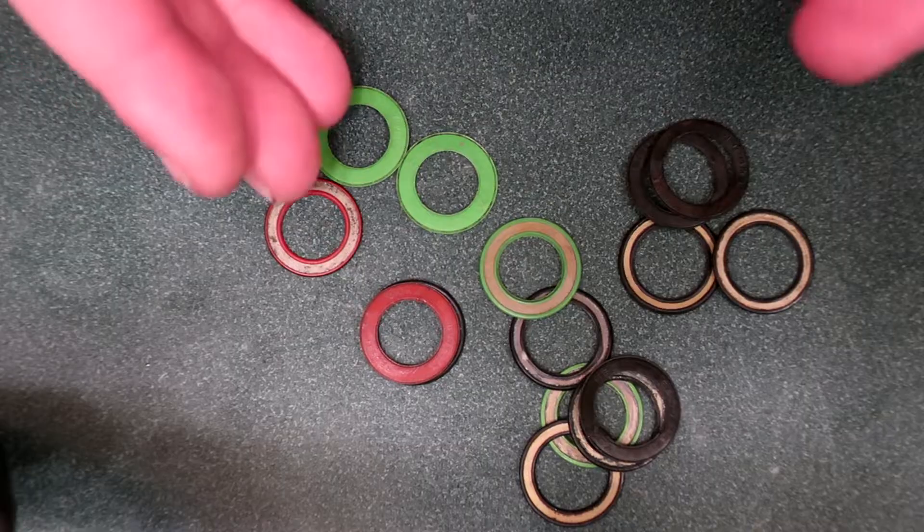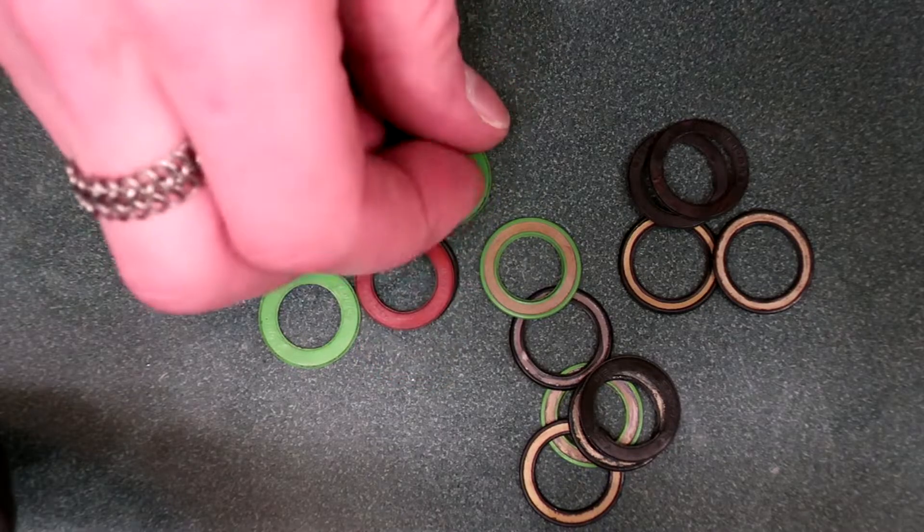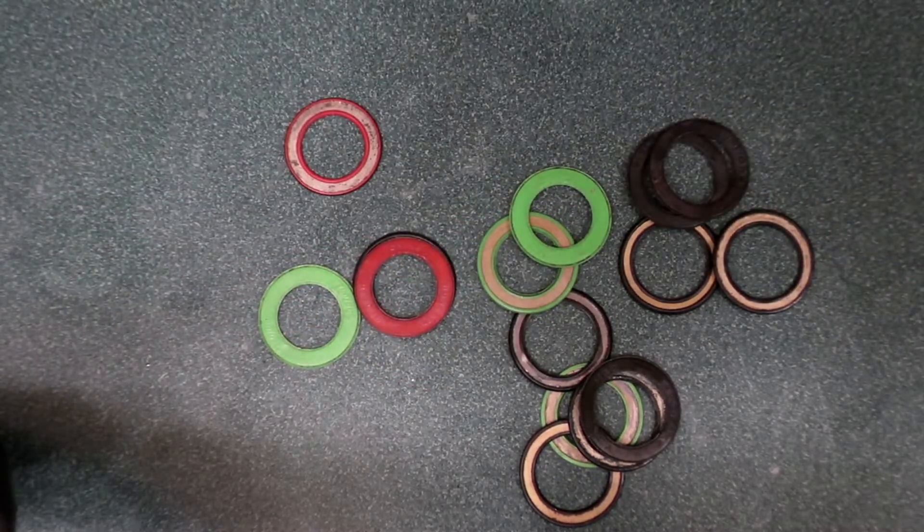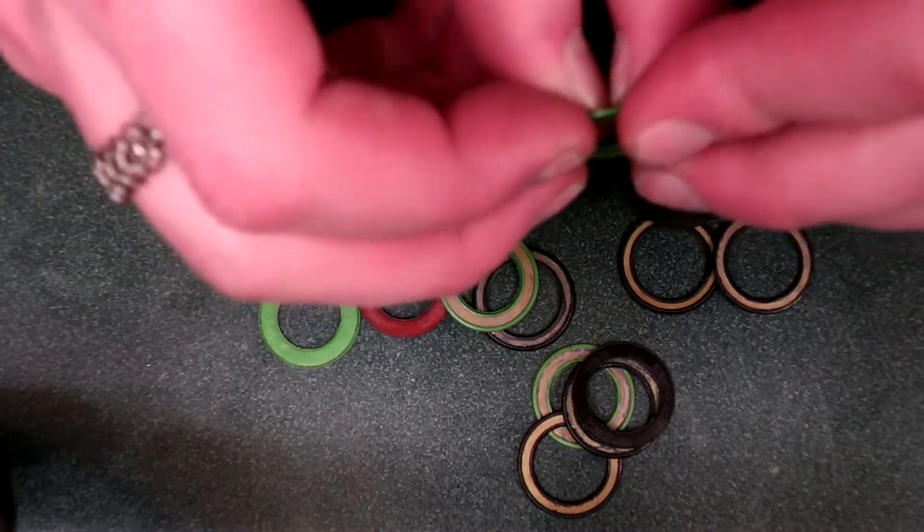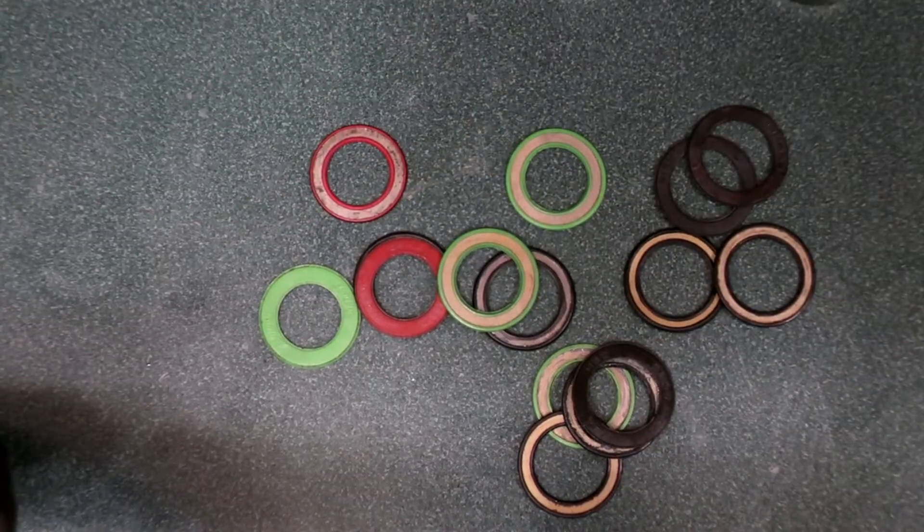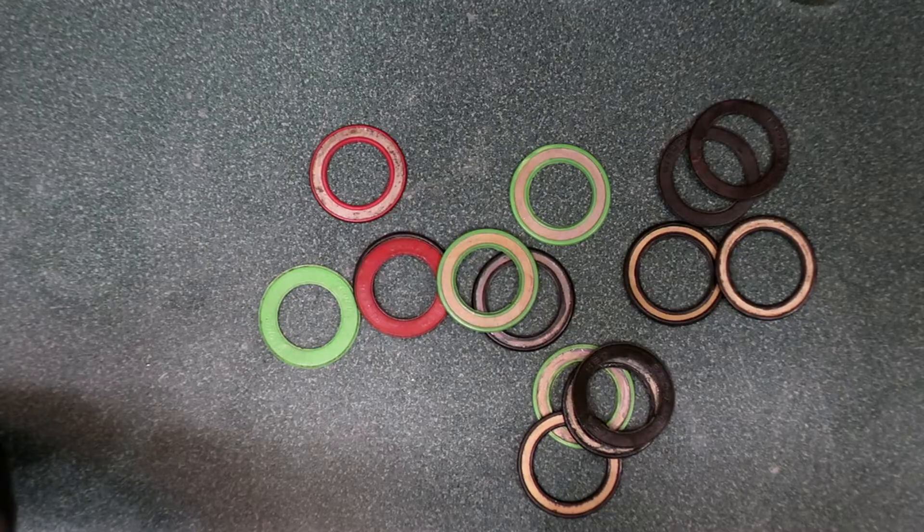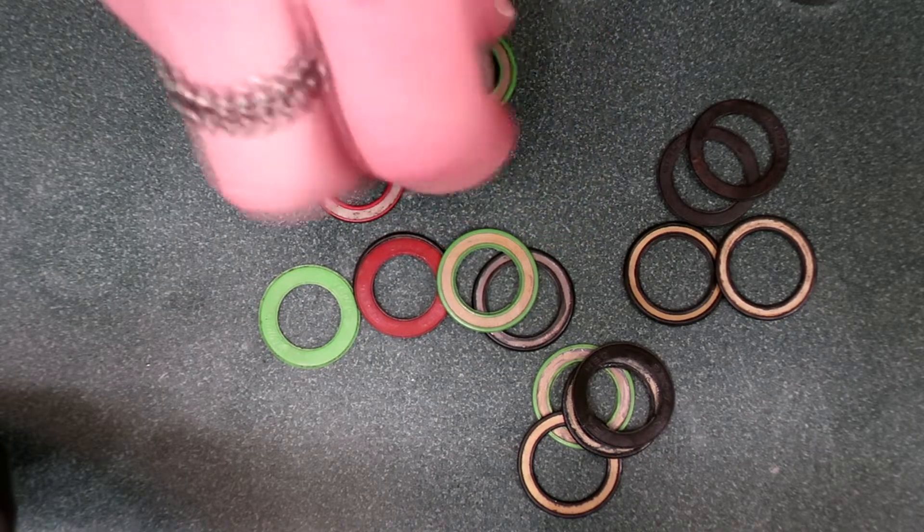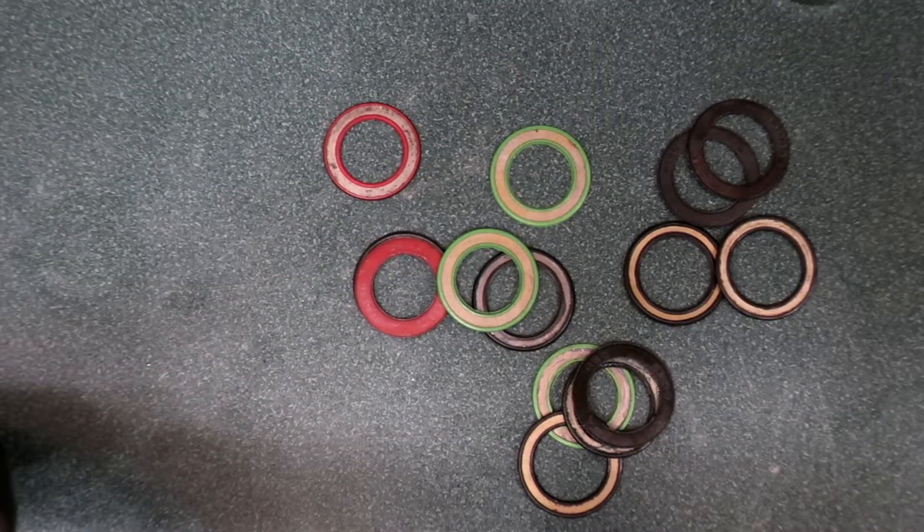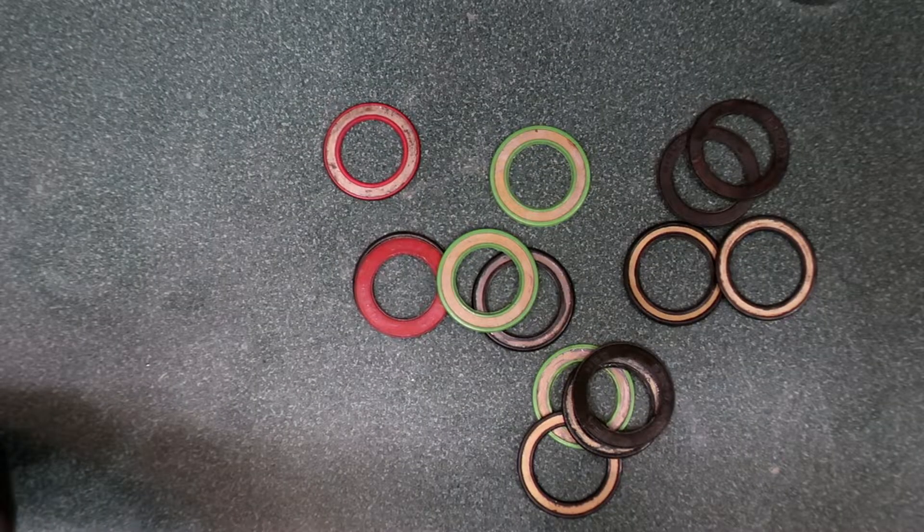Extra rubber shields are nice to have anyway. Because sometimes when you're taking them off to clean, sometimes they do get bent. Sometimes they just get bent being used and they get pressed in and messed up. And you can spend the time to flatten them out, but sometimes it's just nicer just to be able to throw an old damaged shield away and pop in one that is still good. So I recommend keeping your old rubber shields.